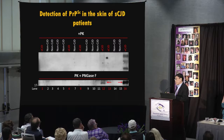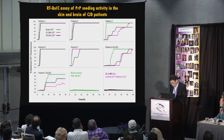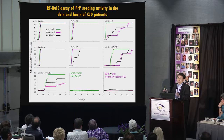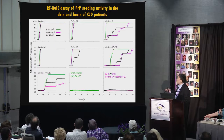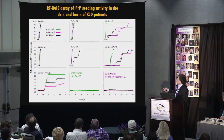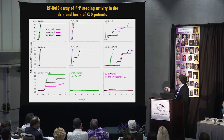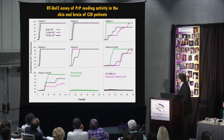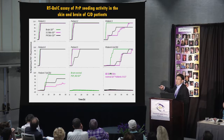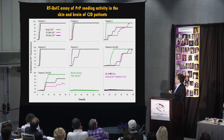We then turned to RT-QuIC analysis, which is a highly sensitive assay for PRPSC. We coded all the skin samples and sent them to Dr. Caughey's lab at the NIH Rocky Mountain Laboratories, where all samples were examined blindly — the examiners did not know the diagnosis. The brain samples were diluted 100,000-fold, and the skin samples were tested without concentration and also at 1,000-fold dilution after ultracentrifugation.